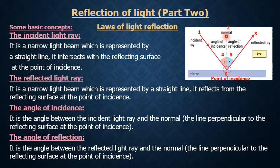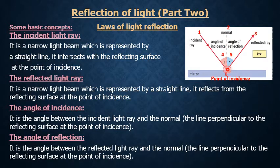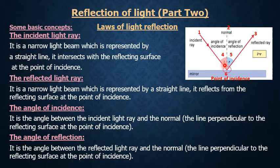We notice in the figure a dashed line. This dashed line is perpendicular to the reflecting surface and it is called the normal. This normal is an imaginary line. The angle between the normal and the incident light ray is called the angle of incidence, represented by number 4 and denoted by the letter I. The angle between the normal and the reflected light ray is called the angle of reflection, represented by number 5 and denoted by the letter R.